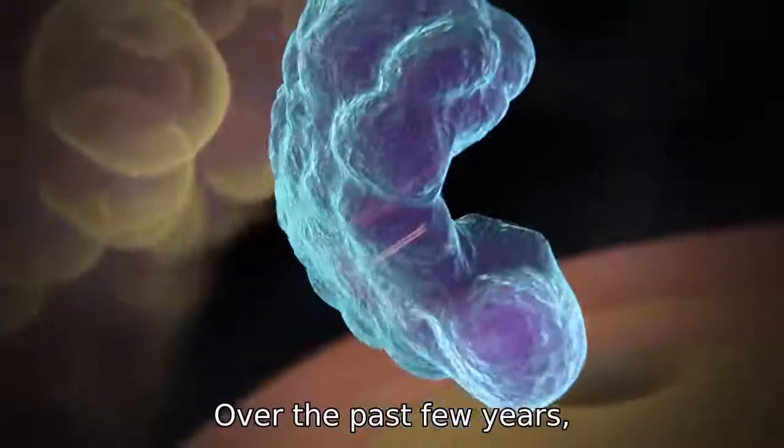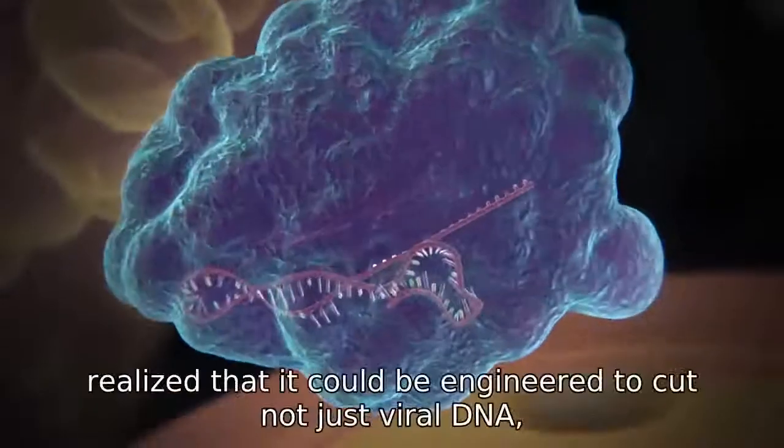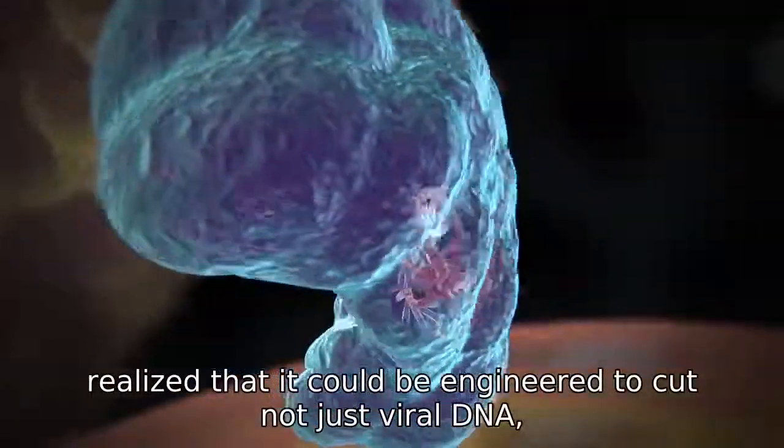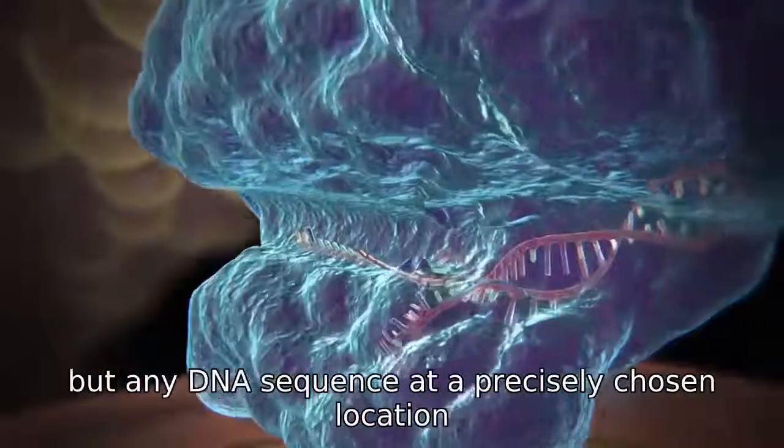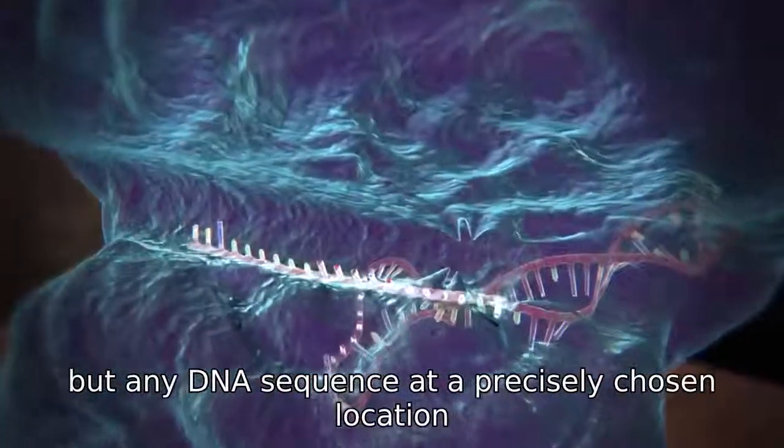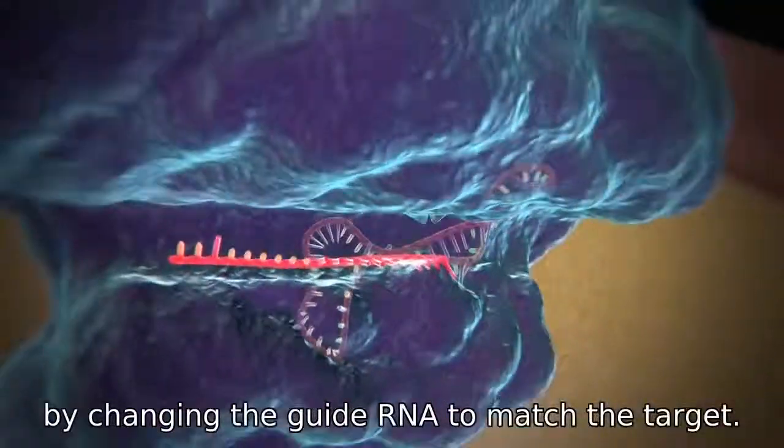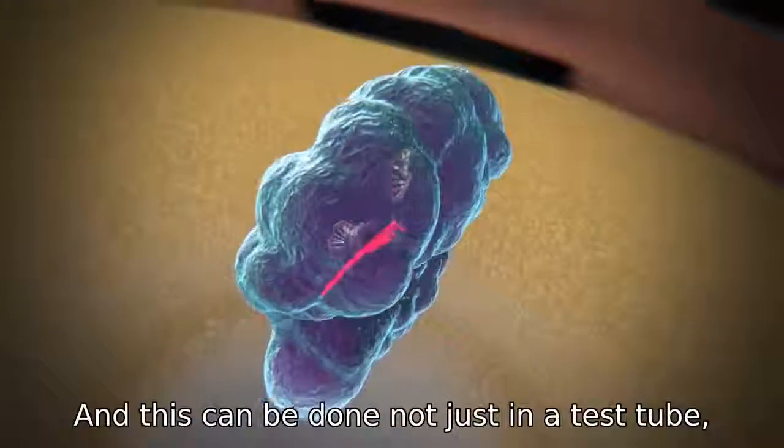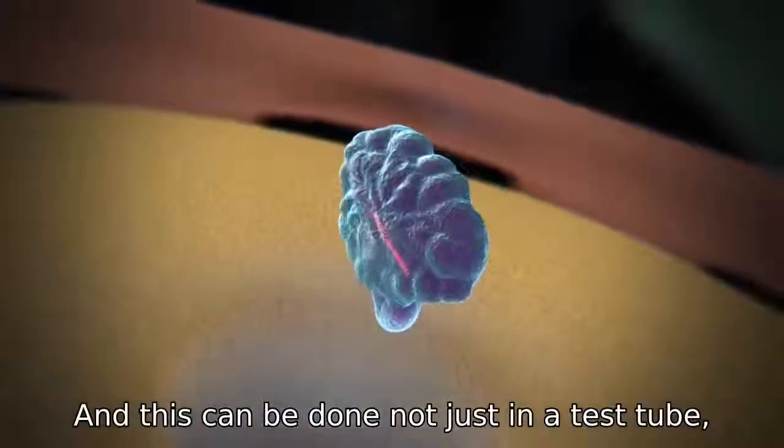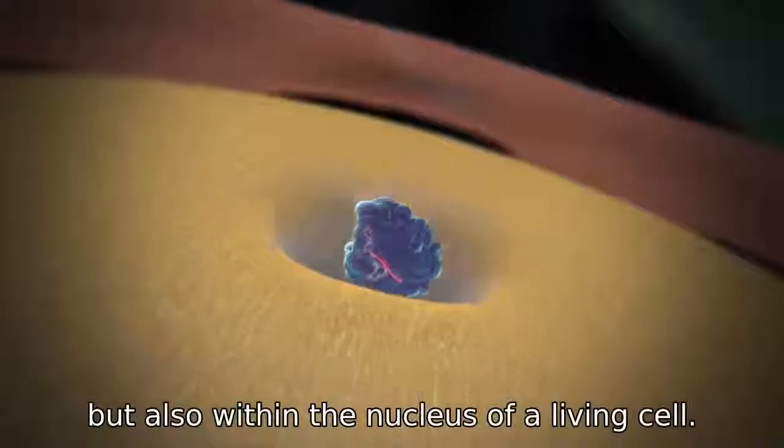Over the past few years, researchers studying this system realized that it could be engineered to cut not just viral DNA, but any DNA sequence at a precisely chosen location, by changing the guide RNA to match the target. And this can be done not just in a test tube, but also within the nucleus of a living cell.